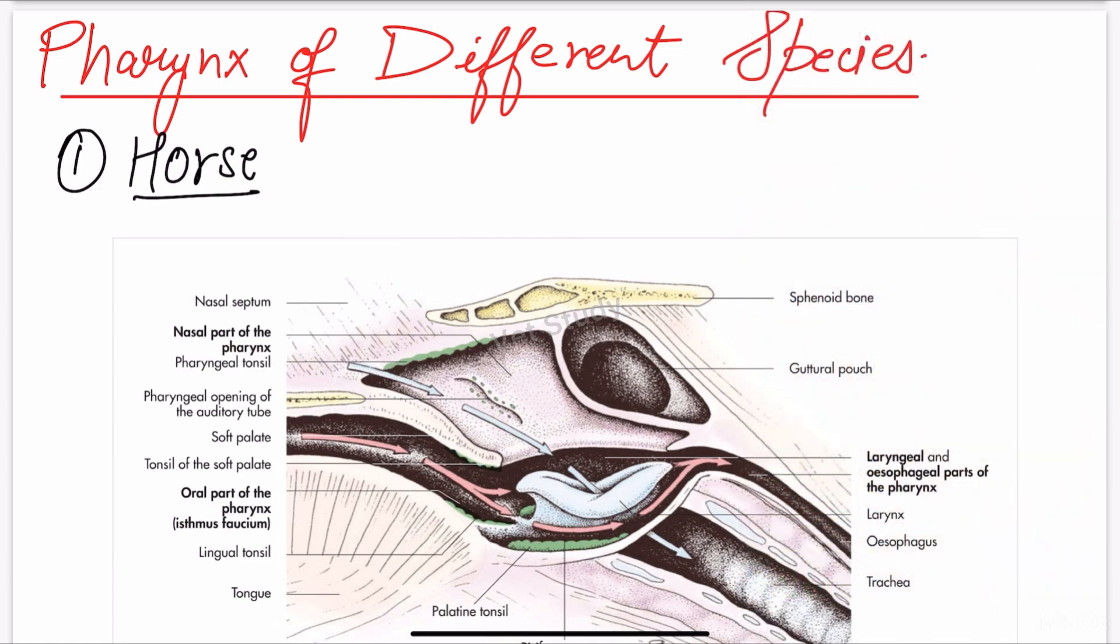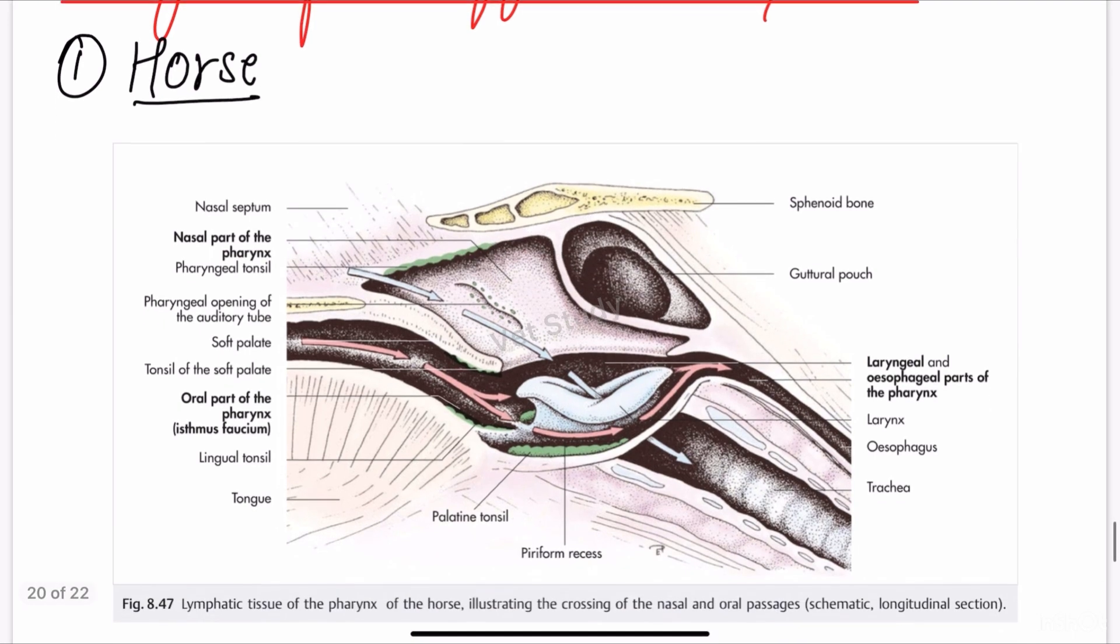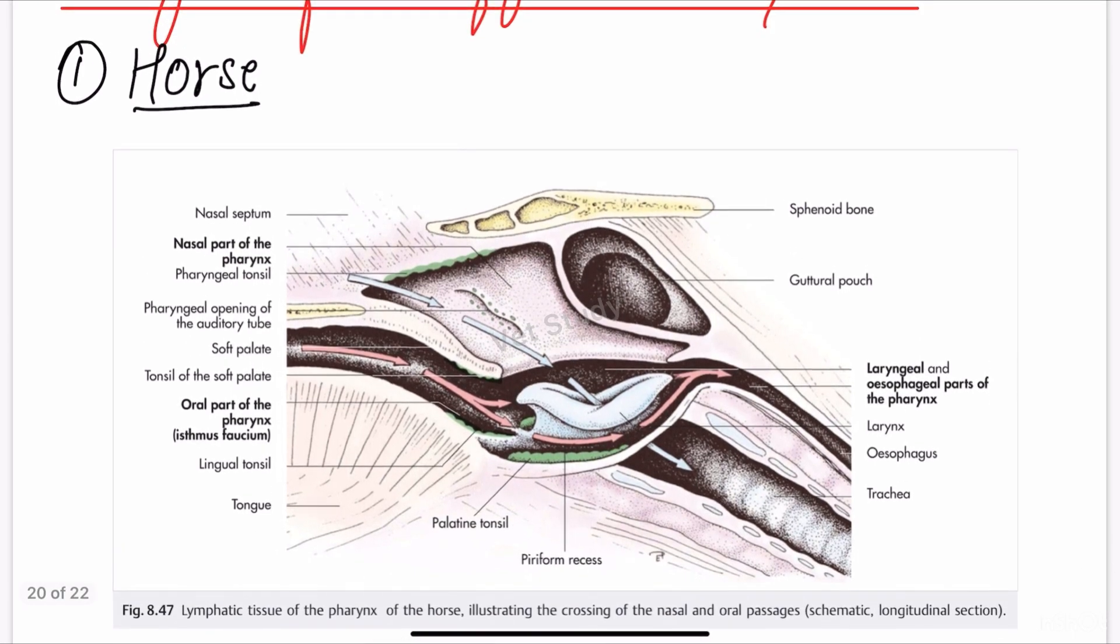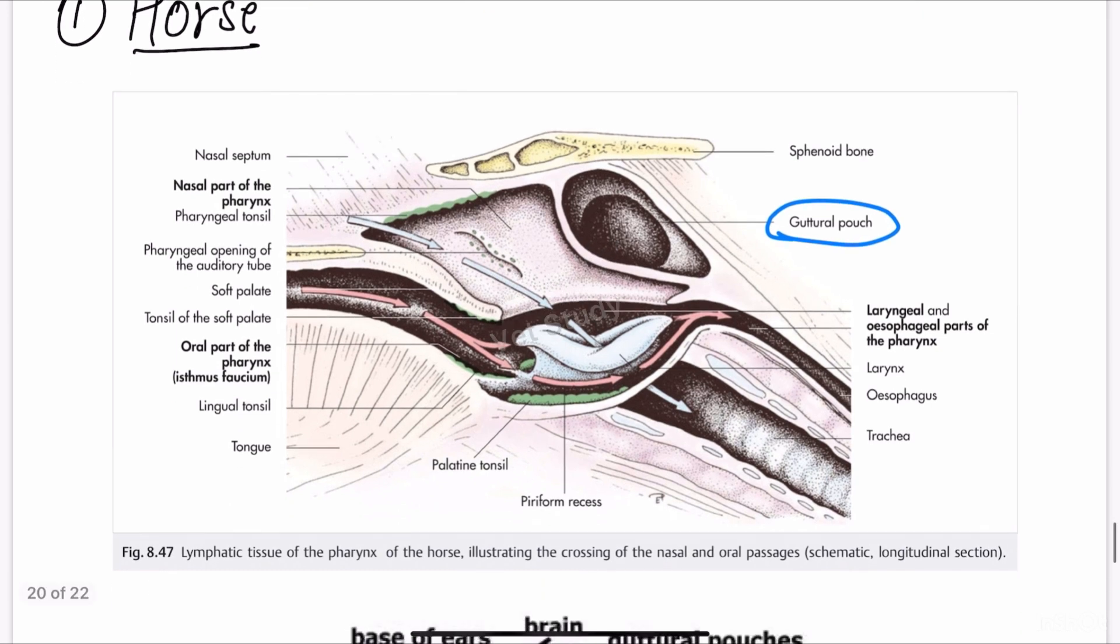The pharynx of the horse is comparatively longer and narrower compared to other species, and superiorly it's related to the guttural pouches. These guttural pouches are very important structures because they're associated with certain diseases. Sometimes pus fills the guttural pouch, which causes serious issues in horses.